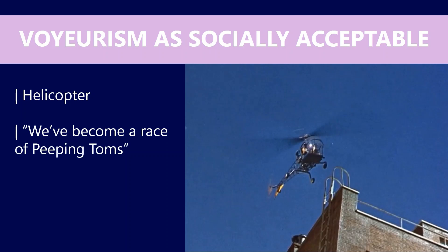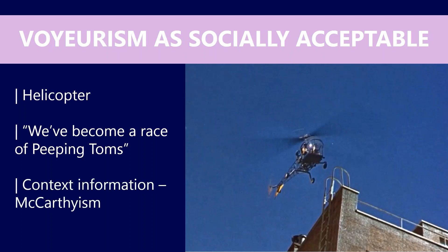I'd also look at the scene involving Stella and Jeffries, where she says 'we've become a race of peeping toms,' lambasting him for his behavior — yet she quickly becomes involved in his theory, ending up watching Thorwald's apartment, trying to find the name on the mail truck, climbing over the fence and digging in his garden. And so too does Lisa. This all supports the idea that it's okay to do it — if individuals like Stella and Lisa are doing it, surely it must be okay. Also consider that the American government at the time were actively promoting and encouraging citizens to spy on their neighbors and name names.